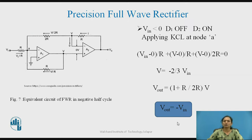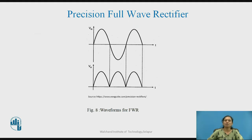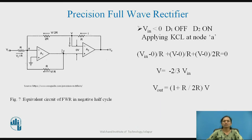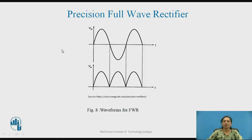Thus, output voltage equals the negative of the input signal. Since we are dealing with the negative half cycle, the two negatives produce a positive output. Therefore, we get a positive output voltage for the negative half cycle as well. We get this waveform for the precision full wave rectifier — positive voltage in both half cycles. If you reverse the directions of the diodes, you will get a negative signal at the output.